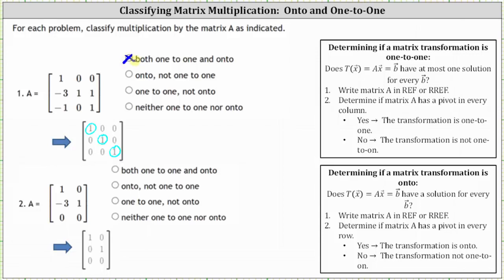For number two, looking at the matrix in reduced row echelon form, we have pivots in row one column one and row two column two. We have pivots in every column, and therefore the multiplication is one-to-one. However, we don't have pivots in every row, and therefore the multiplication is not onto. We select the third option: one-to-one, not onto.